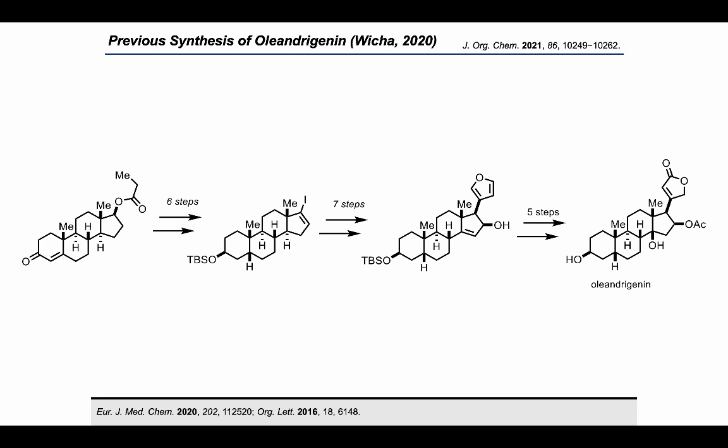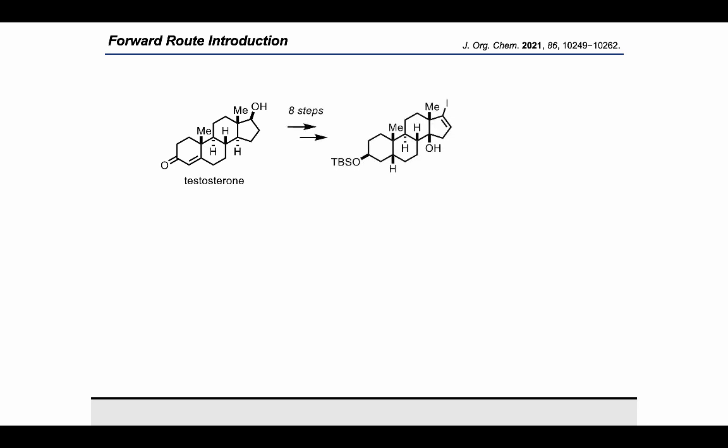For the medicinal chemistry exploration of this compound, we targeted a synthetic route that would minimize D-ring manipulations after the installation of the beta-C17 substituent. We surmised that this could be accomplished by starting from testosterone and, after an eight-step sequence, obtaining the key vinyl iodide intermediate, which contains the pre-installed beta-C14 hydroxyl group.